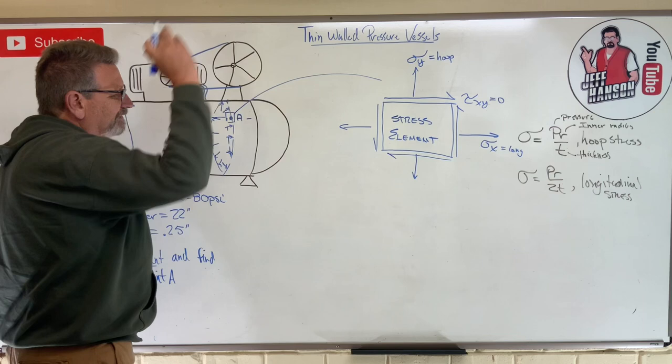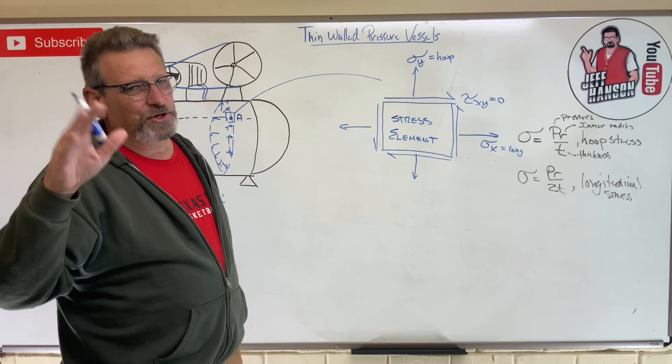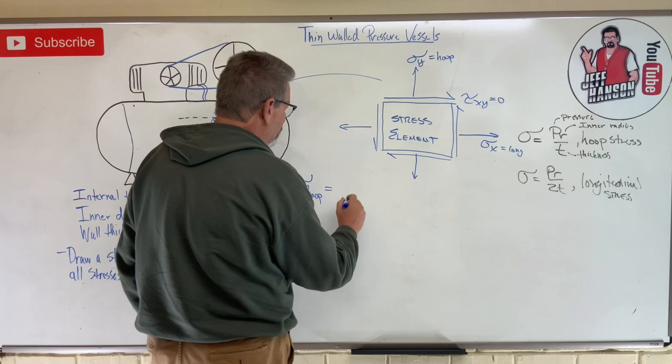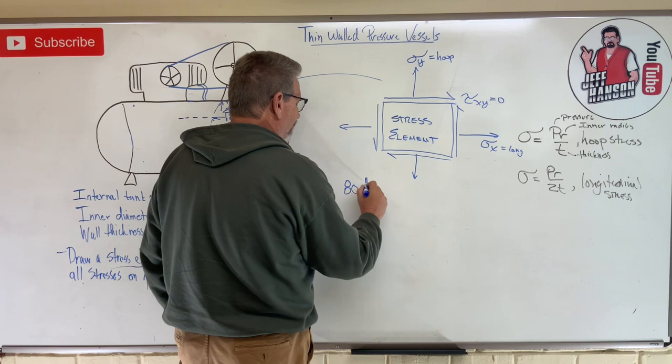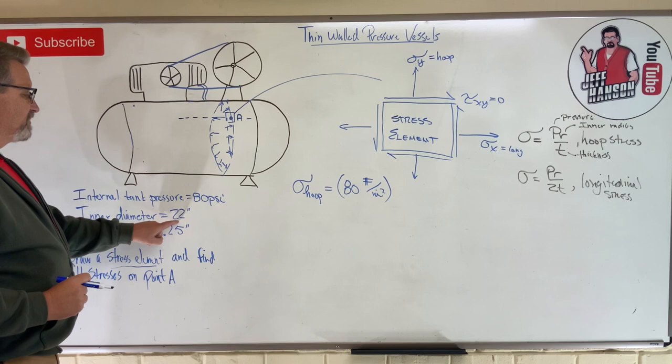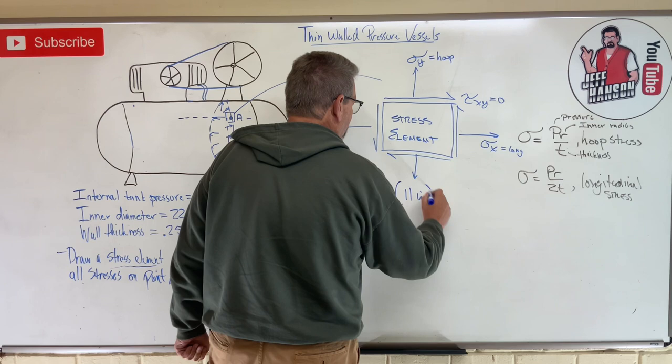This looks pretty easy. Let's see if we can calculate this. All you got to pay attention to is make sure your units cross out. So sigma hoop is pr over t. The pressure is 80 psi, which is pounds per square inch, times r. R is inner radius. Well, they gave you the inner diameter, and so that is 11 inches.